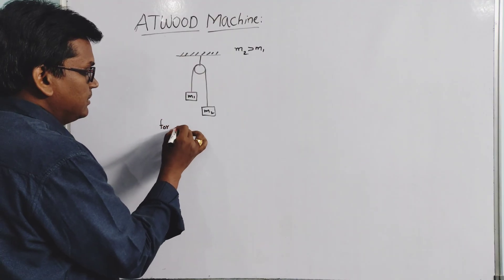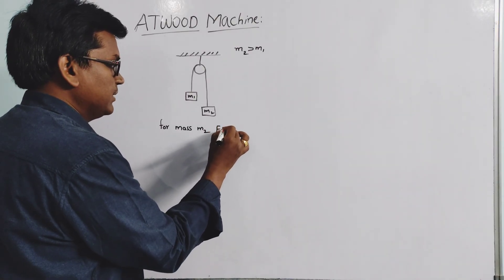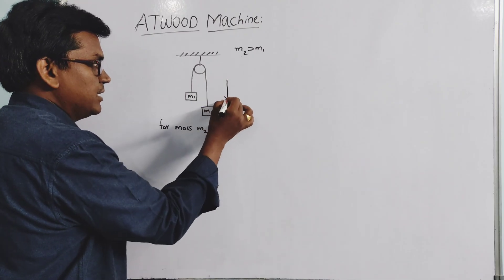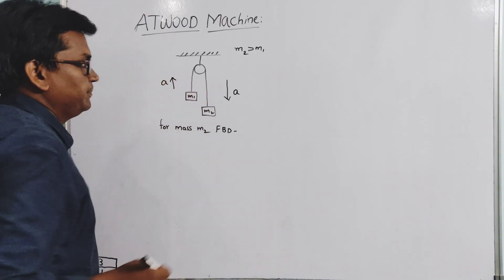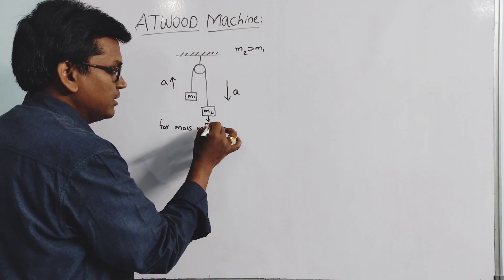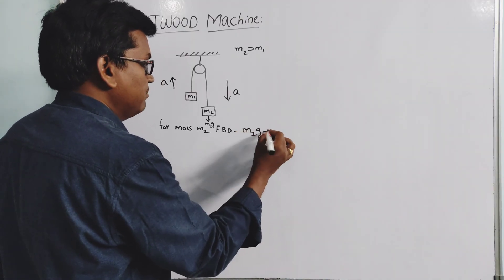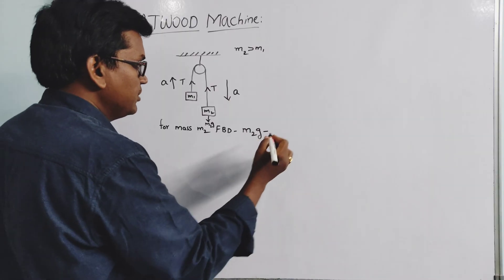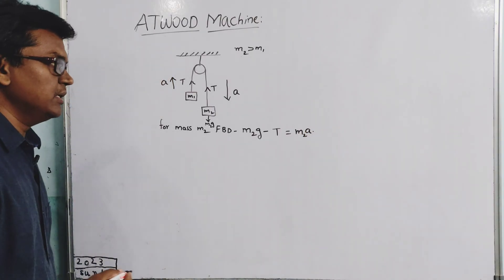For mass m2, since m2 is greater than m1, m2 will accelerate downward and m1 will accelerate upward. The weight m2g acts downward, and tension T acts upward on the string. So the equation for m2 is: m2g minus T equals m2a.